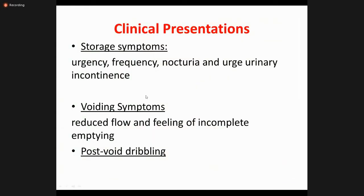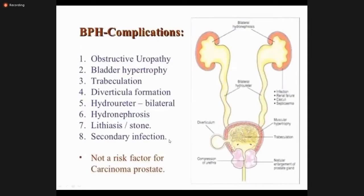Clinically, BPH is initially asymptomatic. The clinical presentation is divided into three types: storage symptoms — urgency, increased frequency, nocturia, and urinary incontinence; voiding symptoms — reduced flow and feeling of incomplete emptying; and post-void dribbling — dribbling of urine after the person has already voided. These are the clinical presentations of BPH.